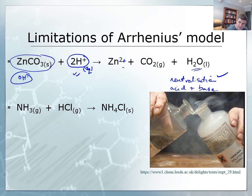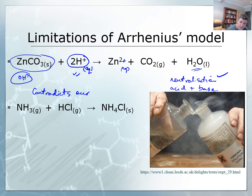Something is not quite fitting our Arrhenius model. This is an observation that we can make that is contradictory to our model — the model of bases that was suggested by Arrhenius.